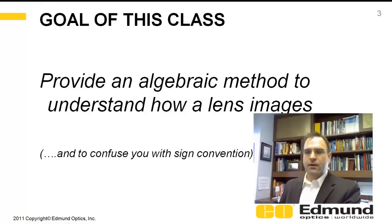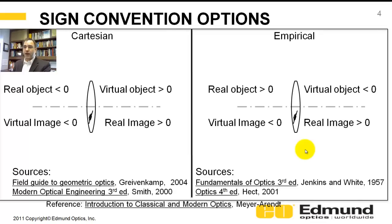And I have a subtle motivation to somewhat confuse you with sign conventions because this will lead into a method of imaging through a lens via a nomograph in an upcoming video. So we have two methods for doing sign conventions in a lens. We've got the so-called Cartesian coordinate system as well as the empirical system.